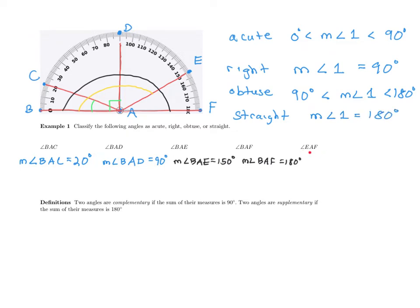There is one more angle: angle EAF. What is the measure of this angle? If you go from 150 to 180, the difference is 30. So from 150, add 30 to get 180. Therefore, the measure of angle EAF is 30 degrees.